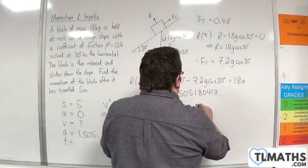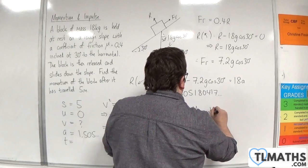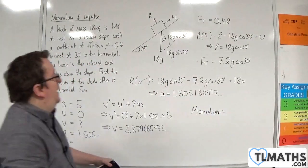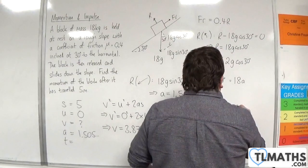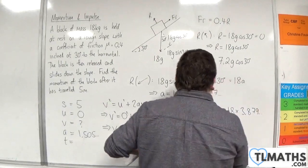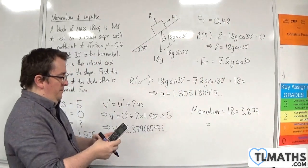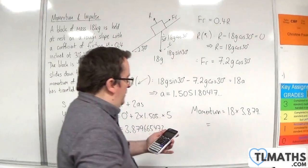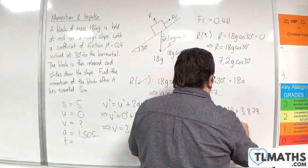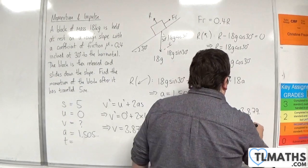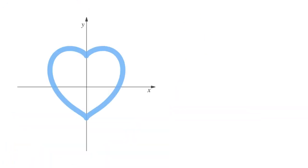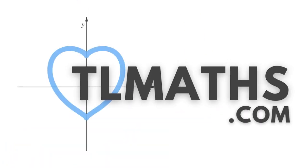So the momentum is equal to the mass, 18, times by the velocity I've just found. So 3.879, etc. So we get 69.8, and that's newton seconds, to three significant figures.